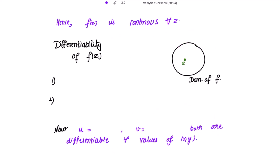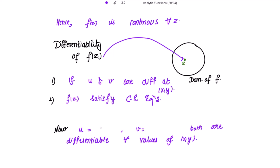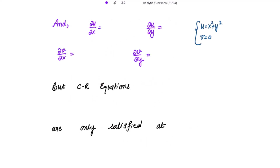For differentiability of f(z), f is differentiable at a point z if u and v are differentiable there, and the function satisfies the Cauchy-Riemann equations. Since u = x² + y² and v = 0, the derivatives of both functions exist everywhere, so they are differentiable for all x, y. Now computing the partial derivatives: ∂u/∂x = 2x, ∂u/∂y = 2y, ∂v/∂x = 0, ∂v/∂y = 0.